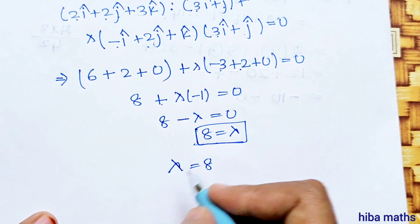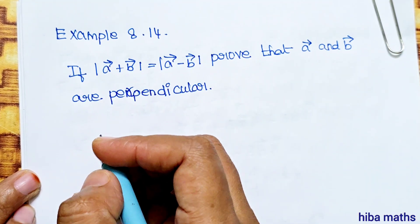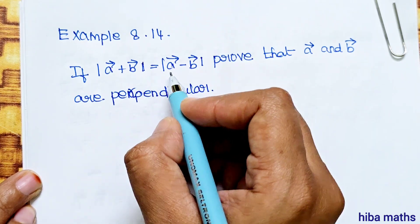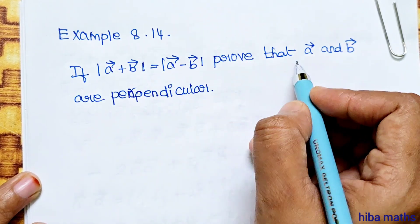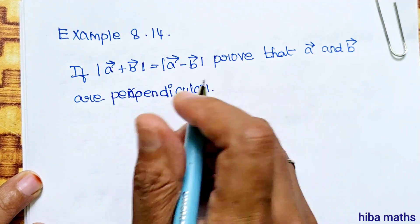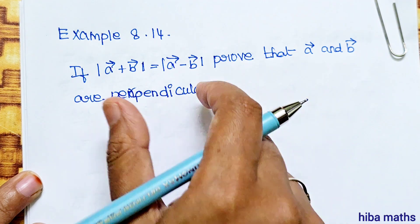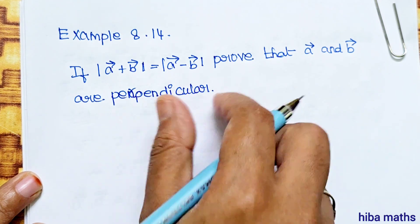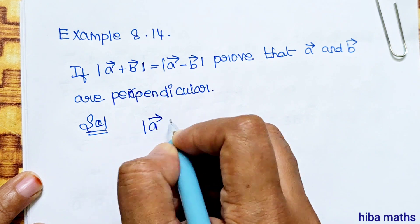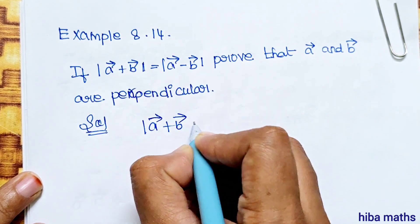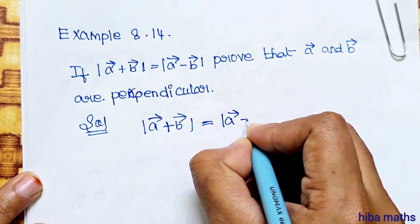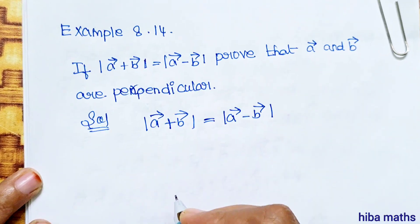Example 8.14: If the modulus of vector a plus vector b is equal to the modulus of vector a minus vector b, prove that vector a and vector b are perpendicular. The given condition is: modulus of (vector a plus vector b) is equal to modulus of (vector a minus vector b).